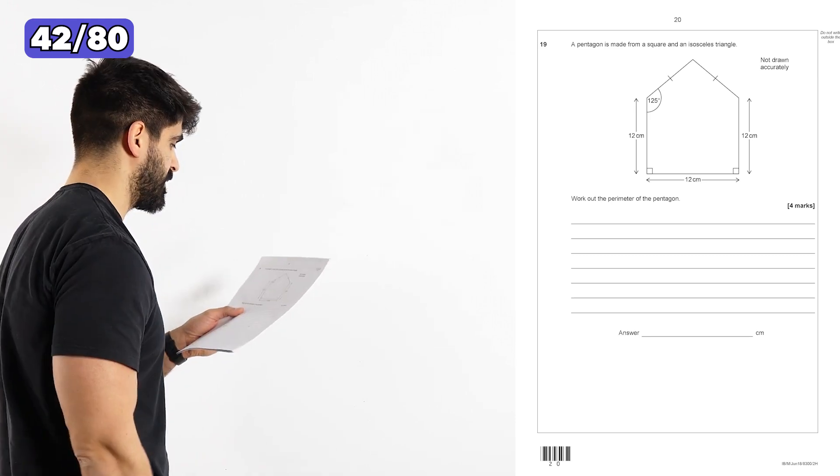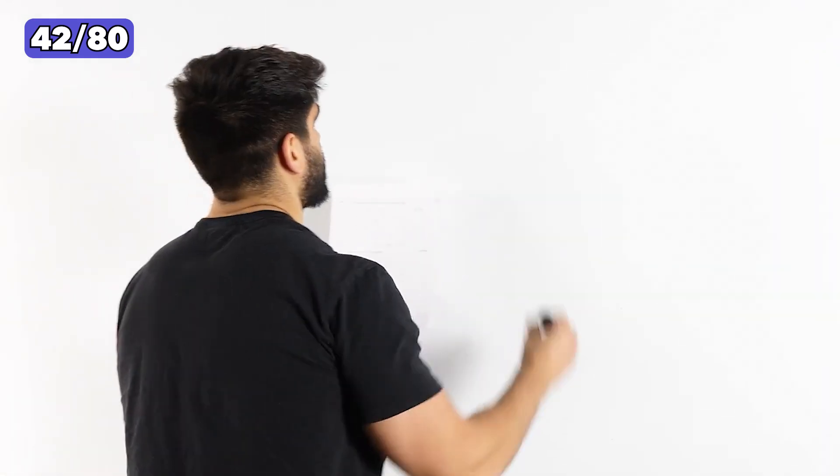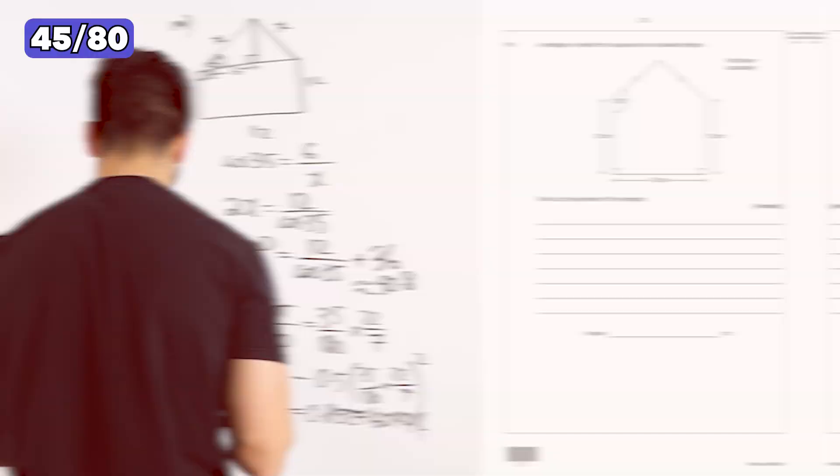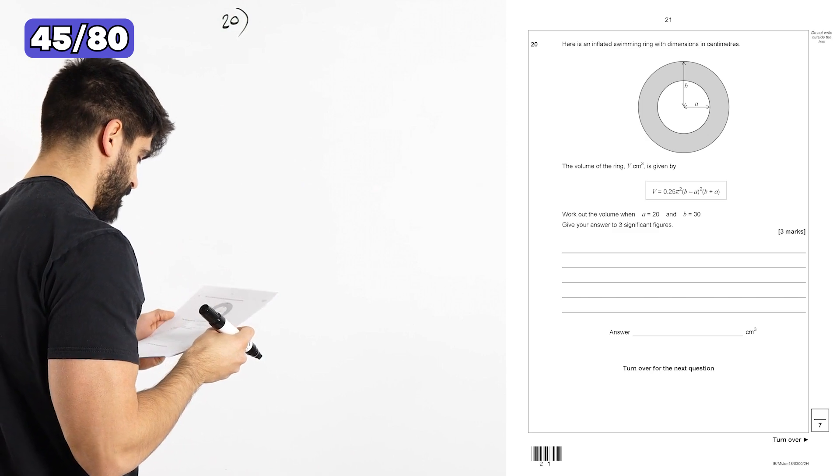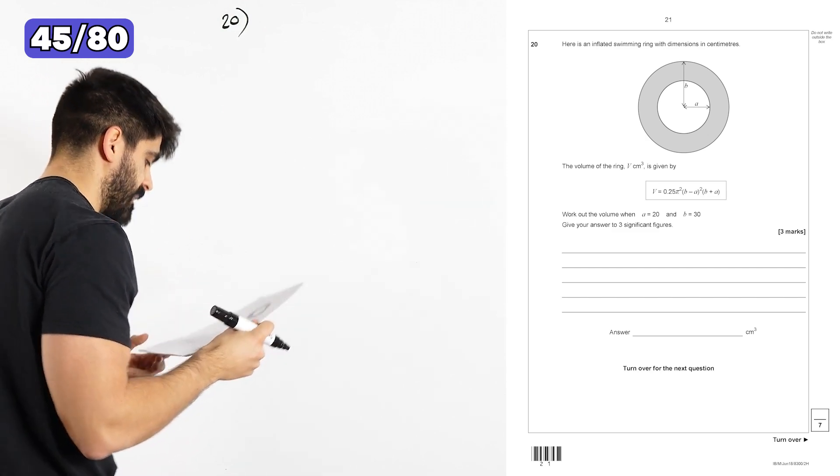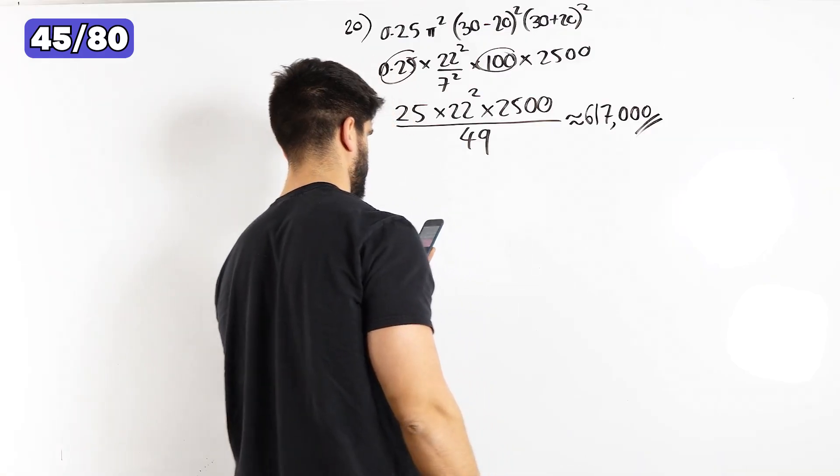Question 19. A pentagon is made from a square and an isosceles triangle. Work out the perimeter. So I'm going to say 50.8. Question 20. Here is an inflated swimming ring with dimensions in centimeters. The volume is given by that. Work out the volume when A is 20, B is 3. Wait, what? 617,000.